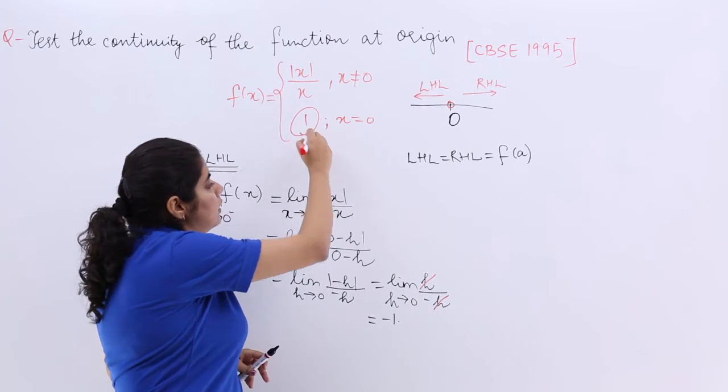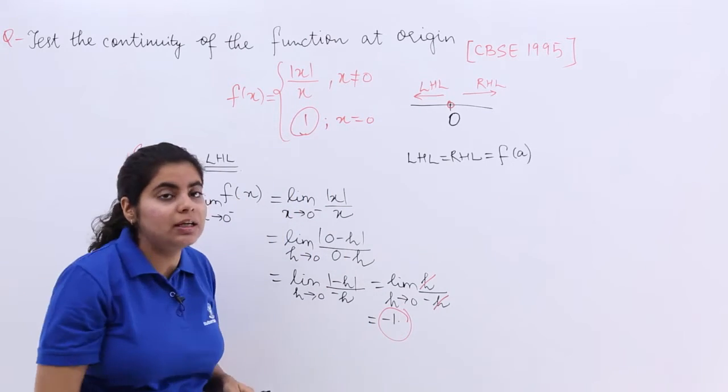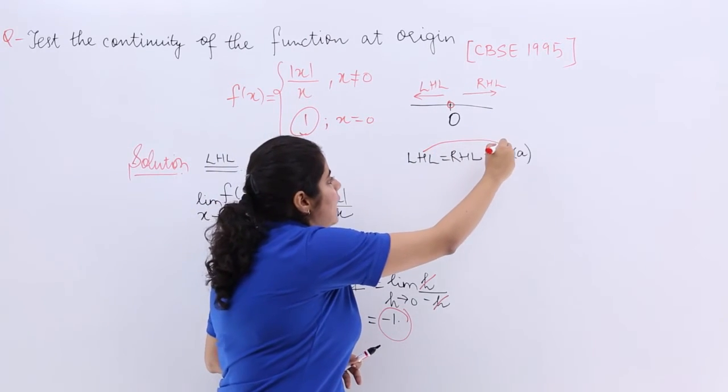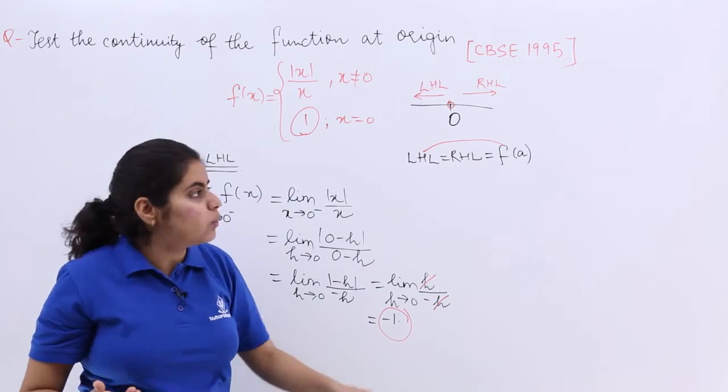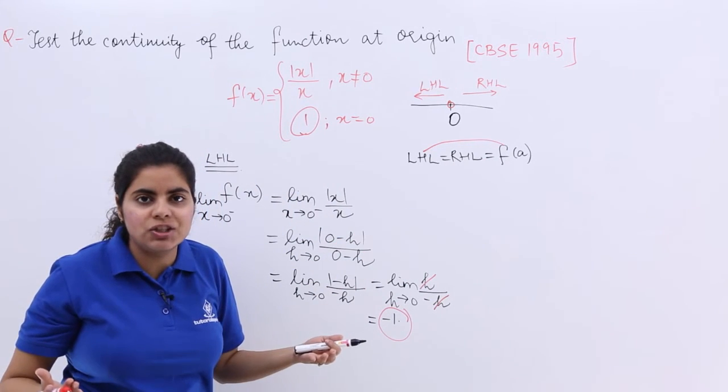Here it is minus 1, so LHL and f are themselves not equal. Why do I waste my time in calculating RHL?